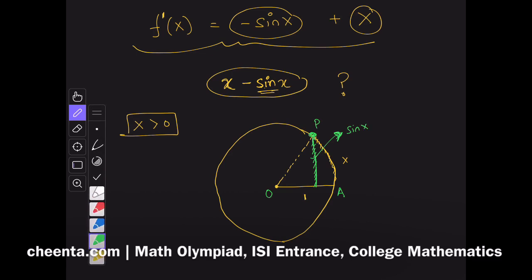And the length of the arc, in this case, rather the half arc, this is x. So, which one is larger? This half arc-ish part? Or is the perpendicular larger? Which one is larger? Think about it.